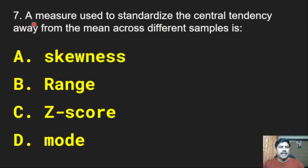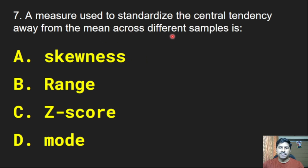Seventh question: A measure used to standardize the central tendency away from the mean across different samples is — skewness, range, z-score, or mode? The correct answer is z-score.